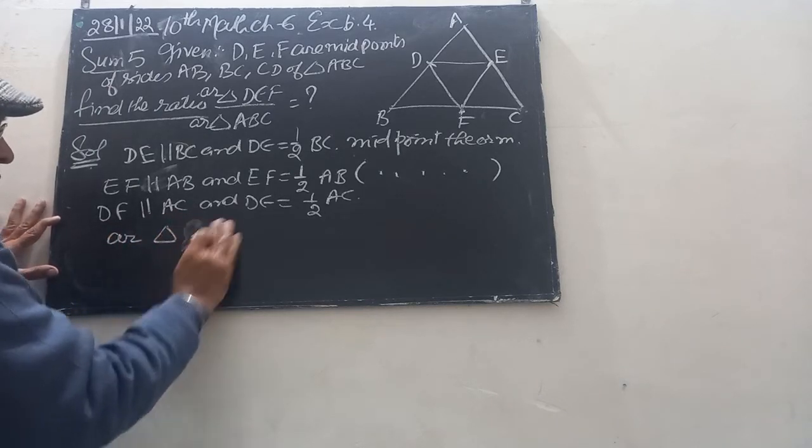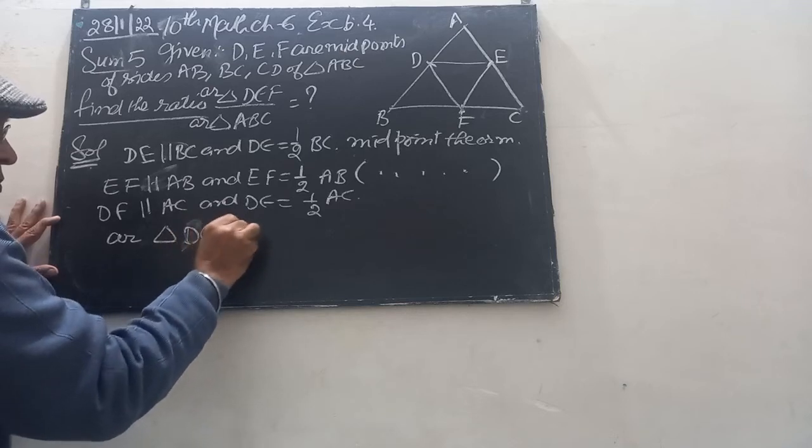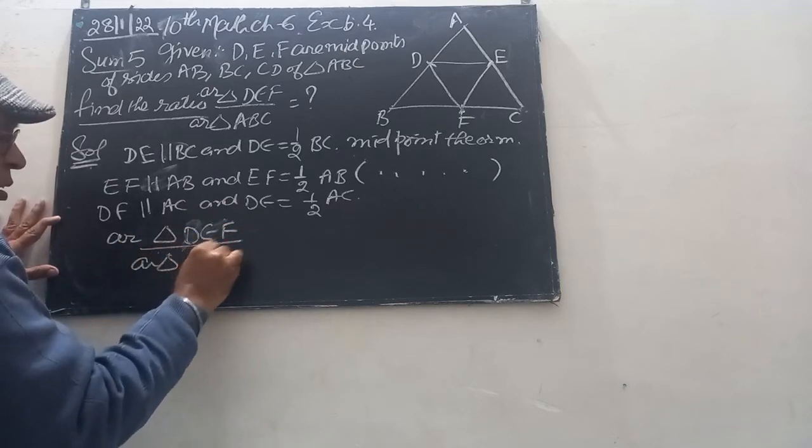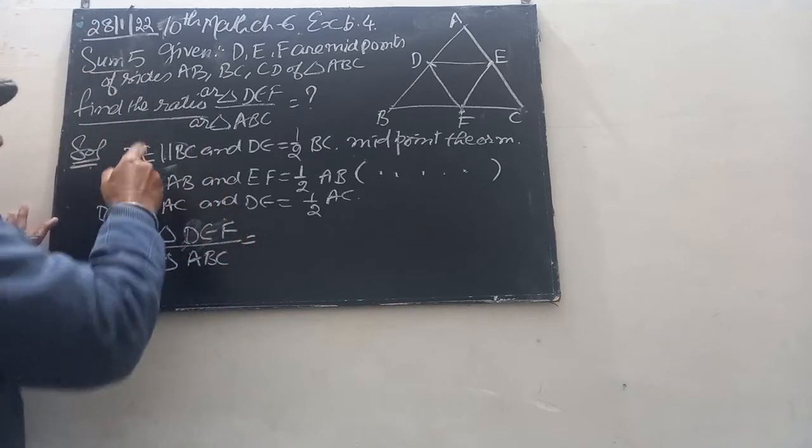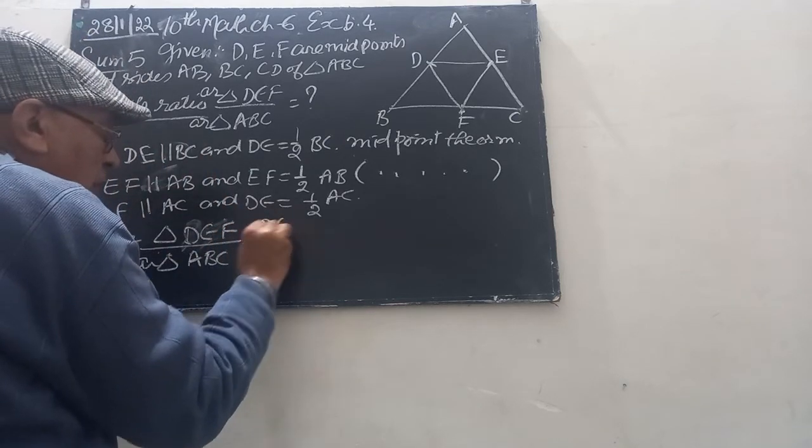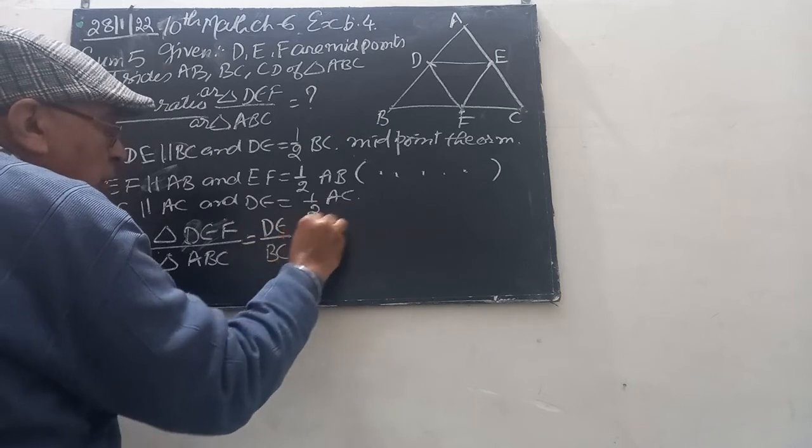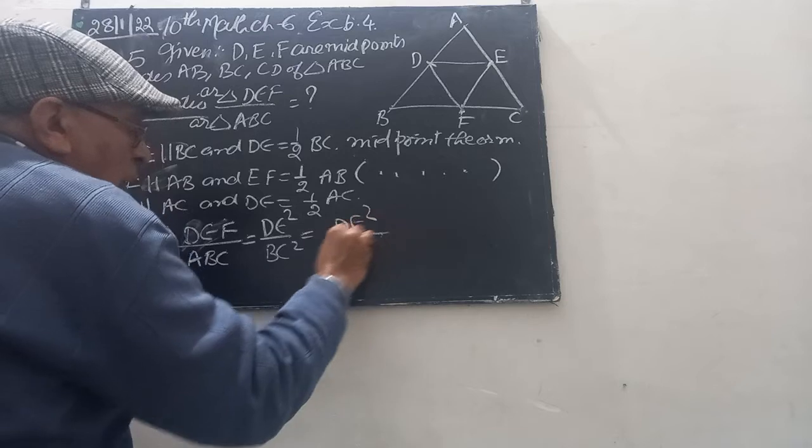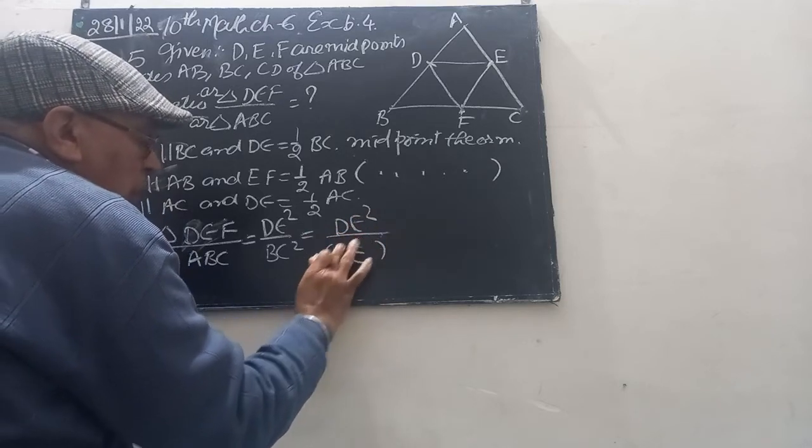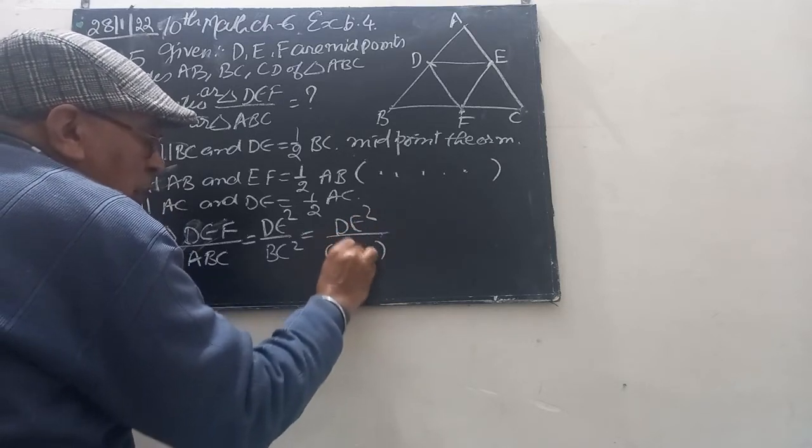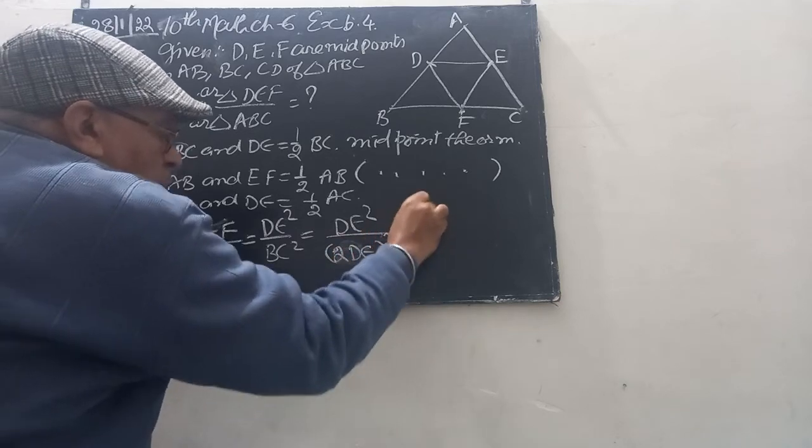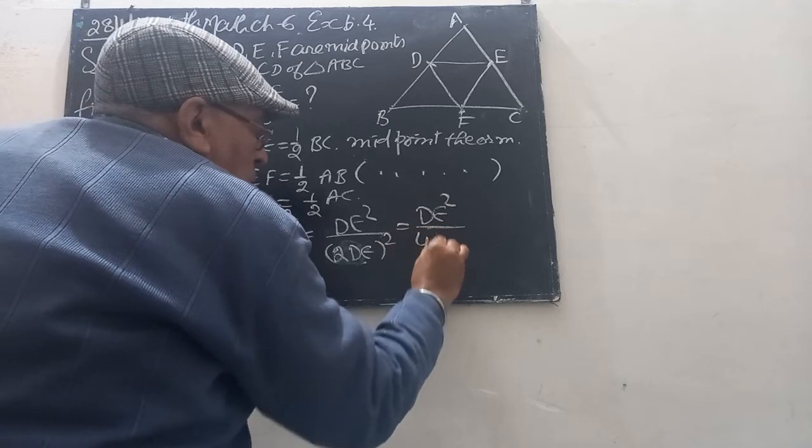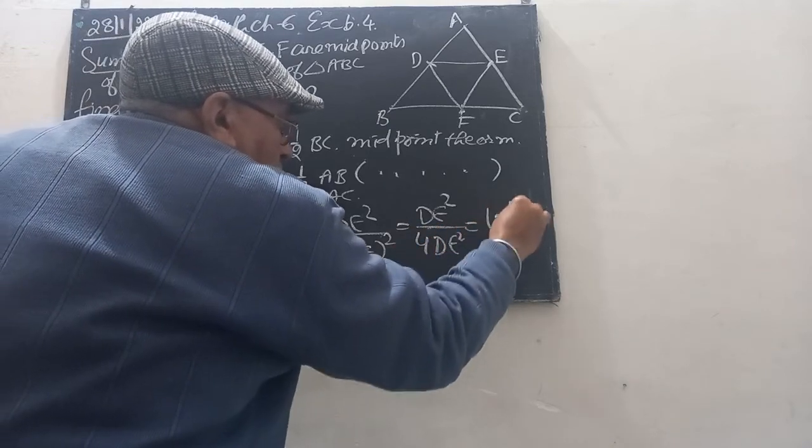Area of triangle ABC and DEF. The area of triangle ABC is equal to... DE scale is equal to DE scale. Four DE scale is equal to one ratio one.